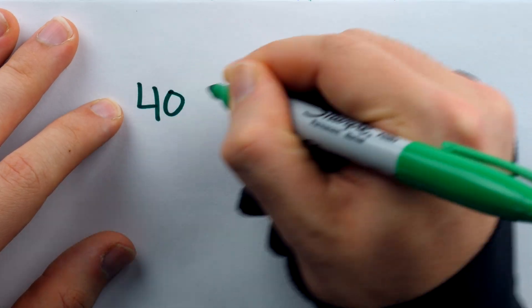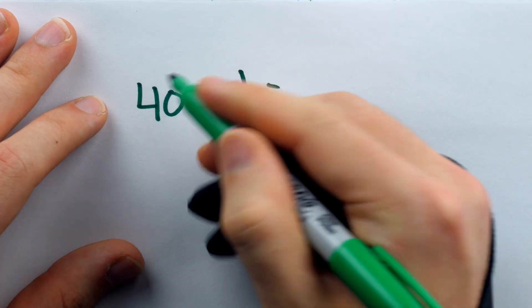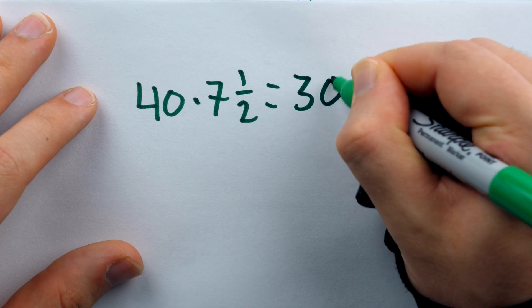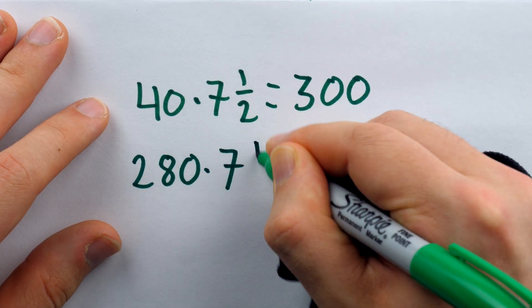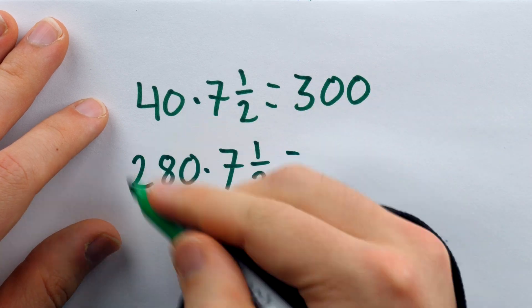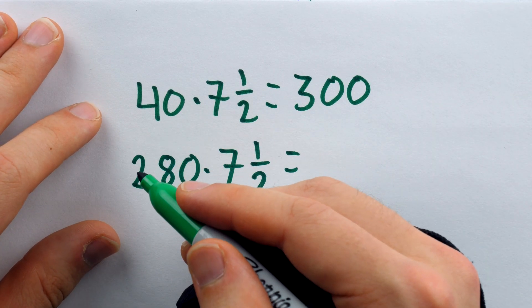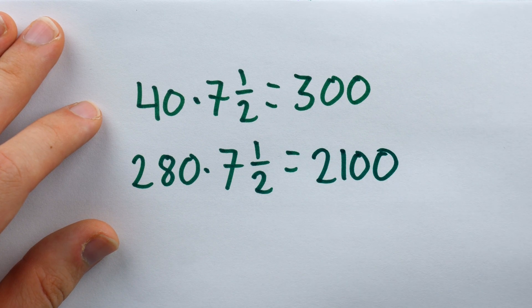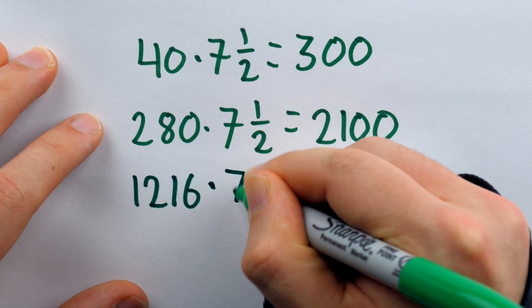Let's try a couple more quick examples. 40 times 7 and a half. Take a fourth away from 40, that gets us to 30. Times 10 is 300. What about 280 times 7 and a half? Well, a fourth of 280 is 70. Take 70 away, and it's 210. Multiply that by 10, and it's 2,100.